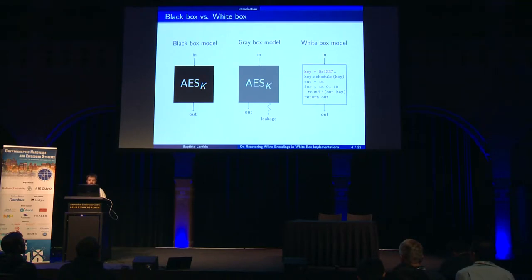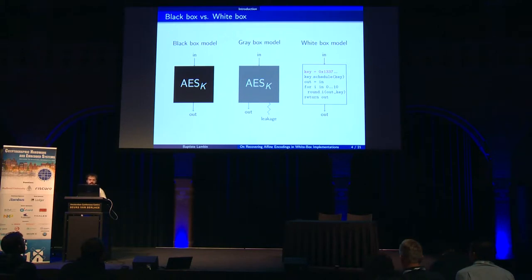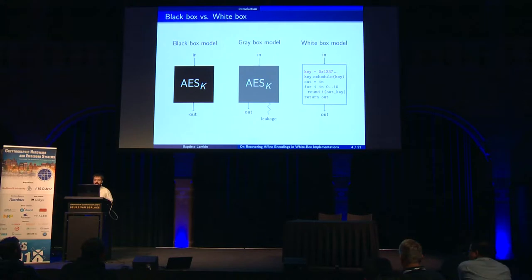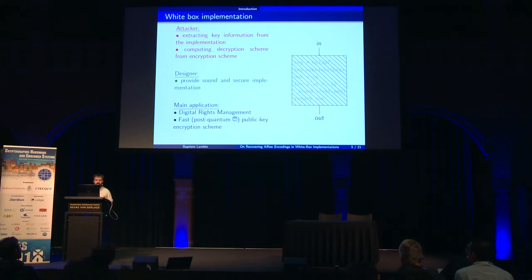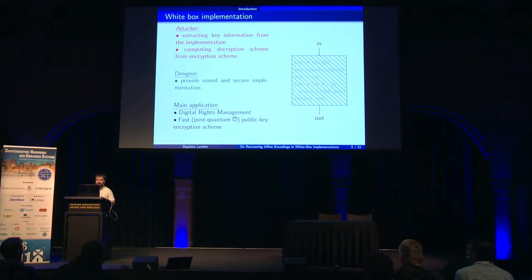If you go a bit further, then you get white box. White box is like the ultimate gray box. You have access to the implementation of this box — you know exactly how it's implemented. You can set breakpoints, skip an instruction, or even modify the implementation if it helps you extract the key. The goal of white box cryptography is to provide an implementation which is secure against such attacks.